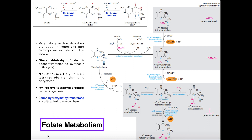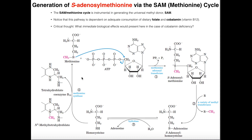Folate intake is extremely important. Individuals who are pregnant and have a deficiency of folic acid in their diet can cause their infant to develop neural tube defects. Additionally, methionine synthase requires not only N5-methyltetrahydrofolate but also vitamin B12, or cobalamins. Because of this shared requirement, folate deficiencies can have similar effects to B12 deficiencies, although there are some additional effects of B12 deficiency that we don't observe with folic acid alone — but some deficiency symptoms overlap quite a bit.